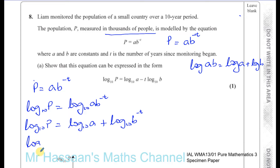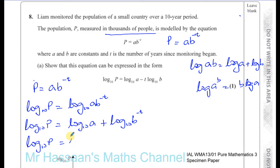Then we can use the power law. The power law states that log base 10 of B to the power of A equals A times log base 10 of B. So the power minus T comes down and multiplies the log, giving us log base 10 of P equals log base 10 of A minus T times log base 10 of B. And we've shown this with those steps.